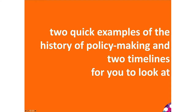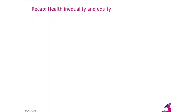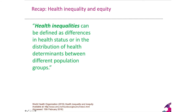Let's look at two quick examples of the history of policymaking, starting with health inequalities — a major strand of work since the 1980s. Health inequalities can be defined as differences in health status or in the distribution of health determinants between different population groups. There are two parts: one is about your health status — how you feel about your health, whether you have physical or mental health conditions or disability — and the other is about health determinants.